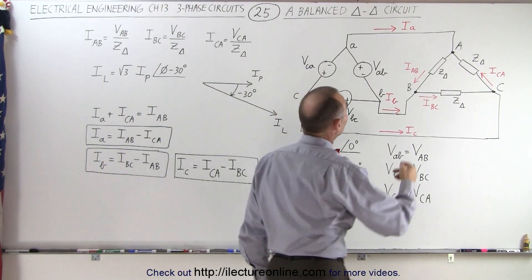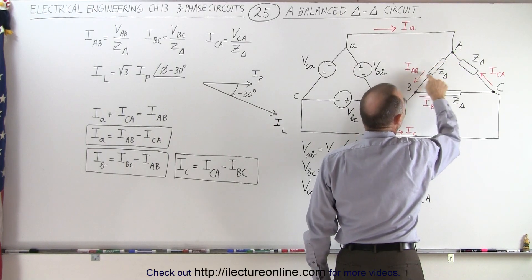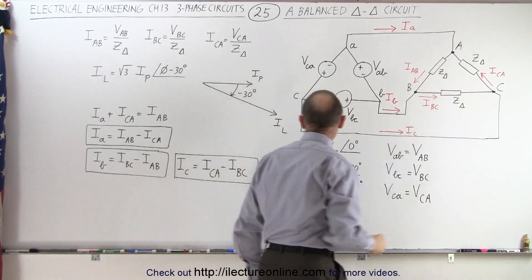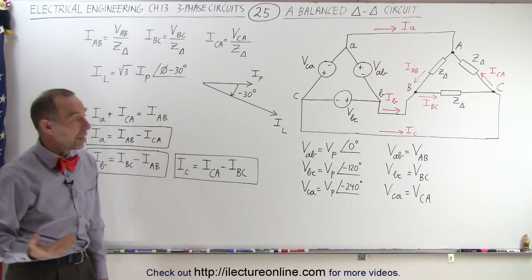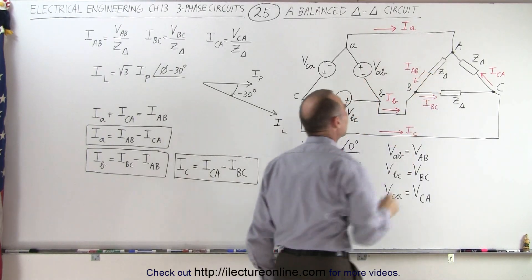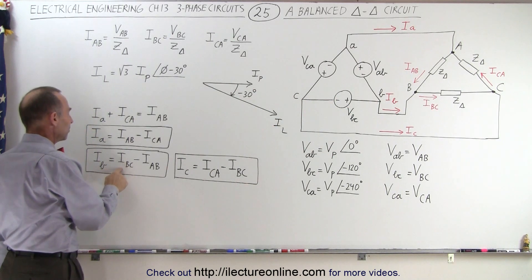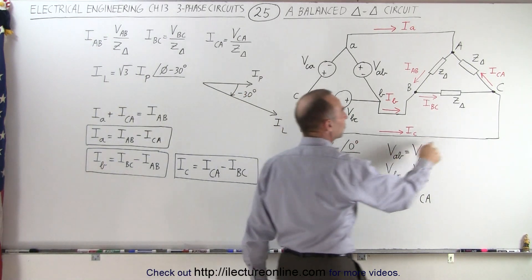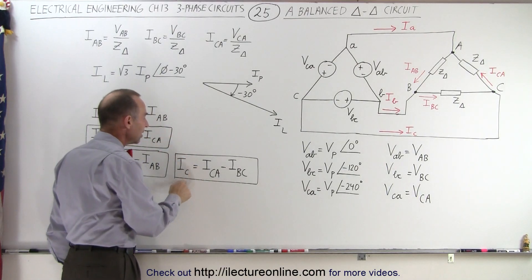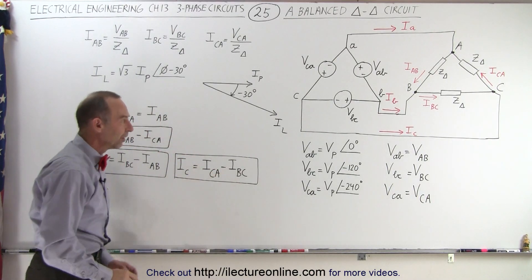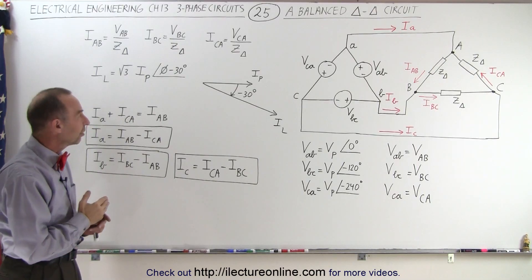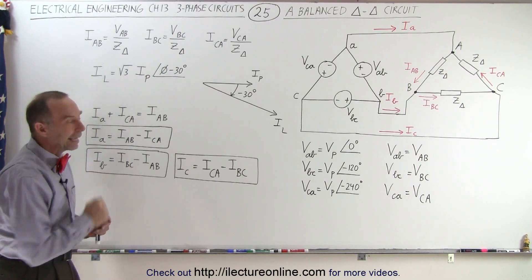Another way of looking at it: IA equals IAB minus ICA, which accounts for the additional current contributed by ICA. Similarly, the line current IB equals IBC minus IAB, and the line current IC equals ICA minus IBC. That summarizes the relationship between the phase voltages and line voltages, and the phase currents and line currents in a delta-delta circuit.